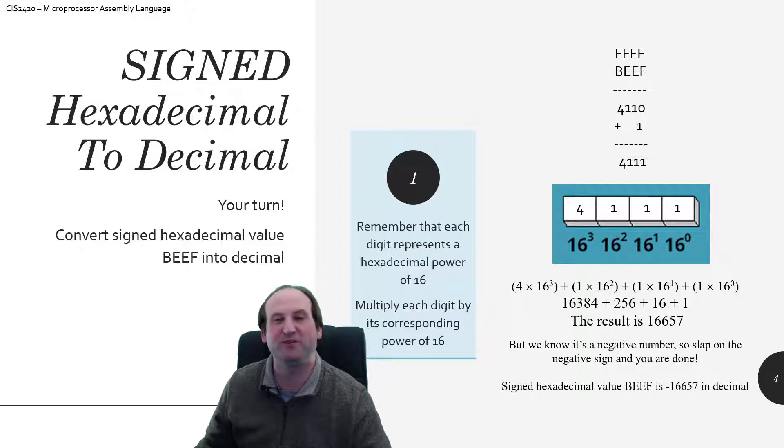So BEEF is a negative number. So if I do some form of 2's complement, I convert BEEF into the positive additive inverse, and then once I do the math, I can convert that into decimal and then slap a negative on the end, just like we did in the previous example.